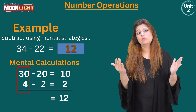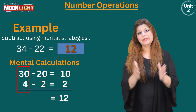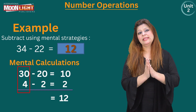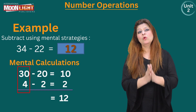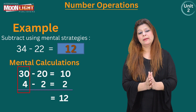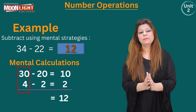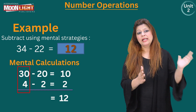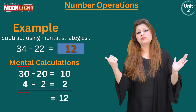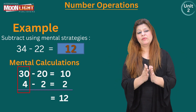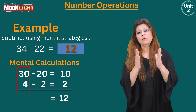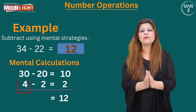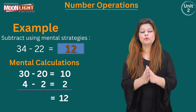In other words, this is the place value of the number 34: 30 plus 4. Now, what about the place value of the number 22?